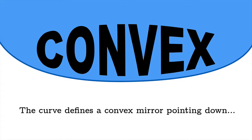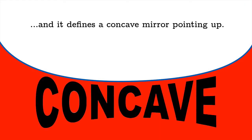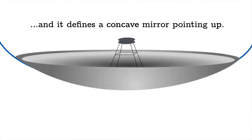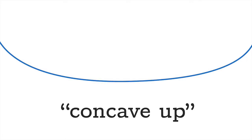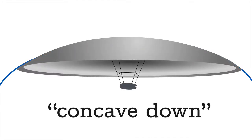Let's get back to the graph of a function. To motivate our definition, we're going to imagine that the curve divides the plane into two shapes. Imagine that the curve defines a convex mirror pointing down and also defines a concave mirror pointing up — for this reason we'll say the curve is concave up. Similarly, if you see a curve bending the other way, we'll declare that curve to be concave down.